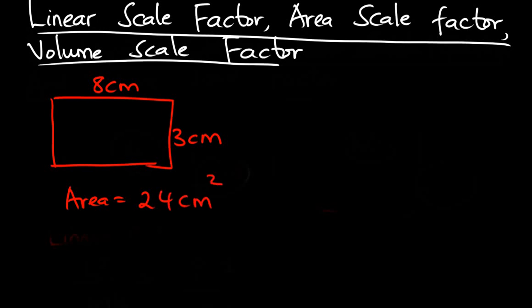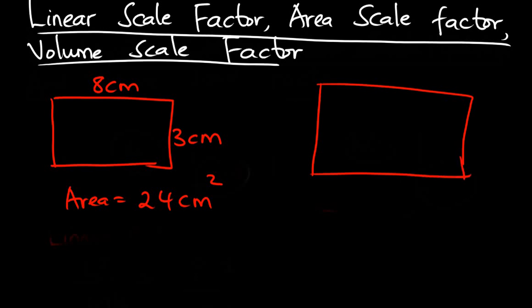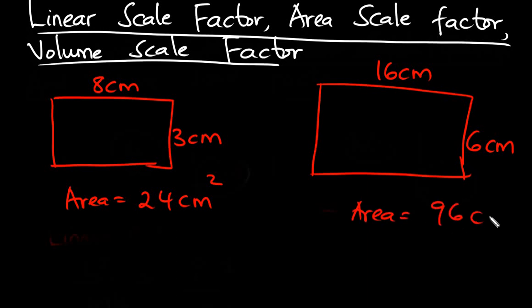The area of this rectangle is 8 × 3 cm, which is 24 cm². Now, let's multiply each of these sides of this rectangle by 2. We are going to have another larger rectangle measuring 16 cm by 6 cm. So we have multiplied each of the sides by 2. Now let's also find the area of this rectangle.